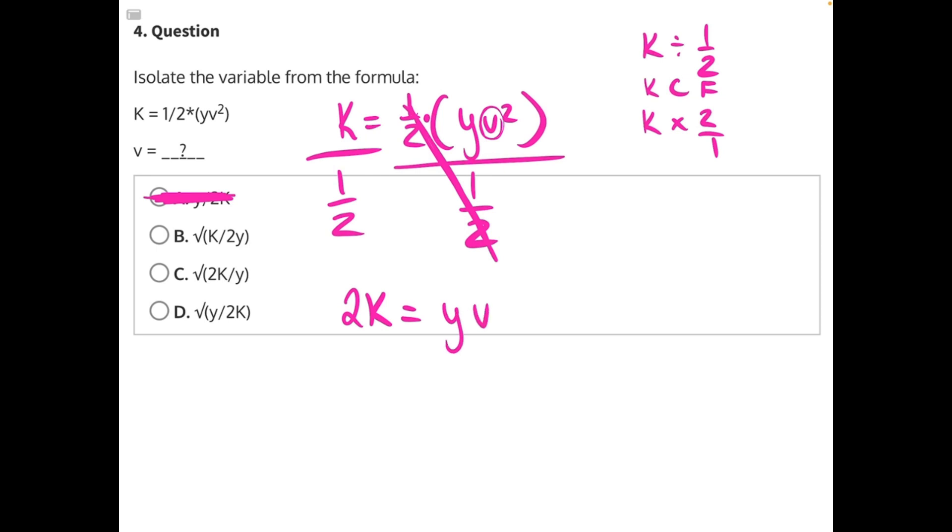We're still trying to isolate v. Let's get rid of this y next. y is being multiplied to v. Opposite operation is division, so let's divide both sides by y. These y's will cancel, leaving us with 2k over y equals v squared.